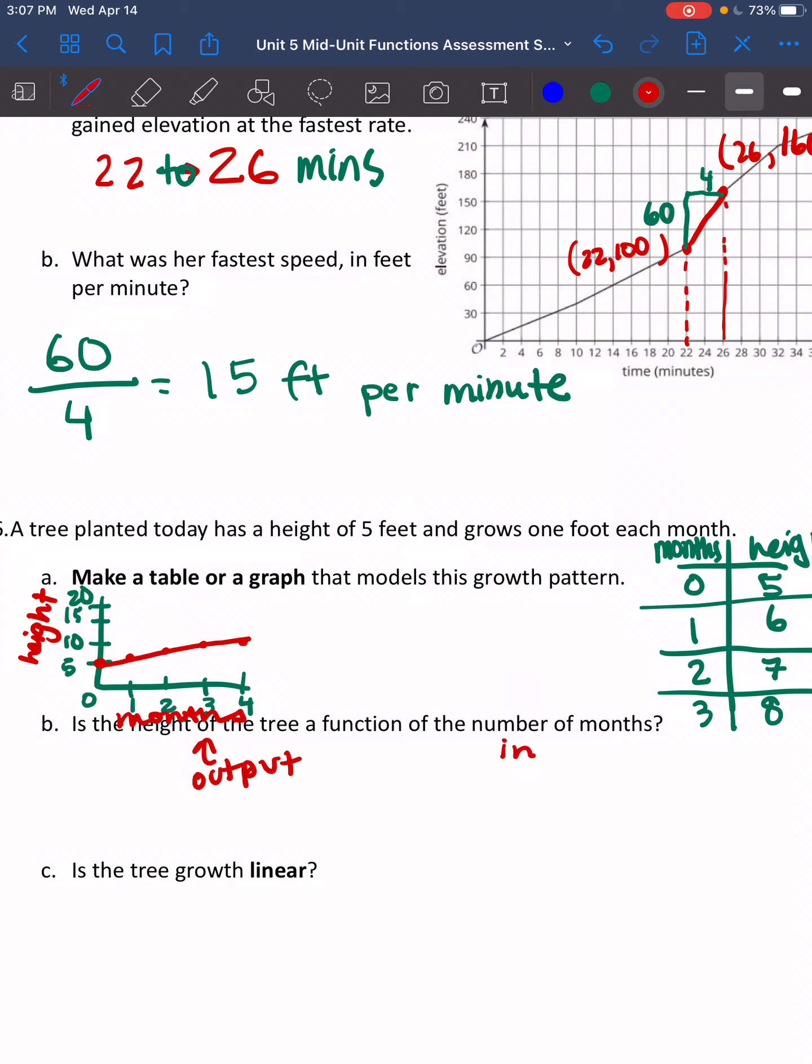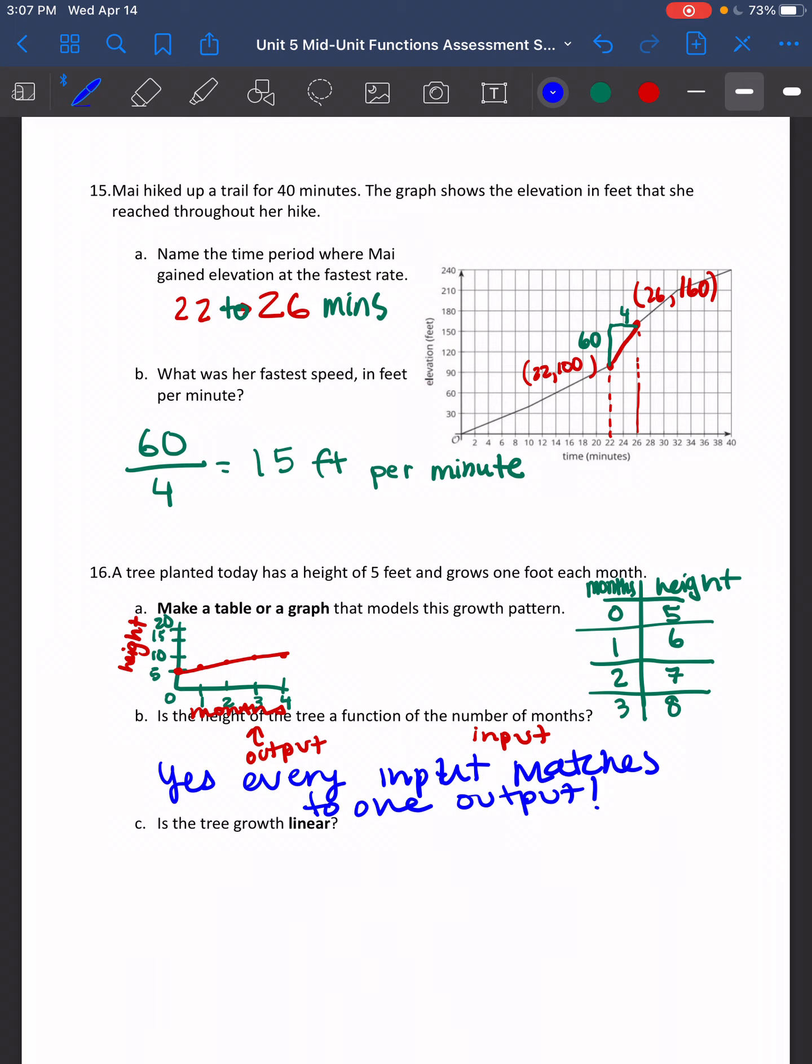Is the tree growth linear? Did that make a straight line? Yes, it did. And we know there is a constant rate of change. The tree doesn't grow one foot one month and two feet the next month. It's always growing one foot.